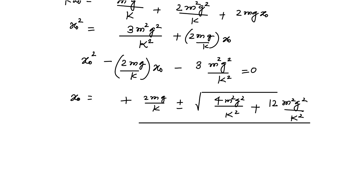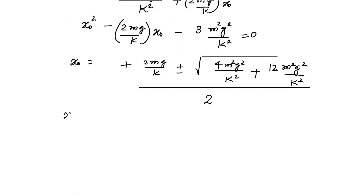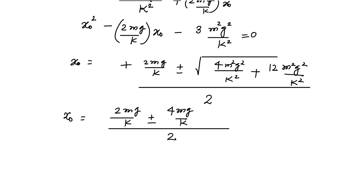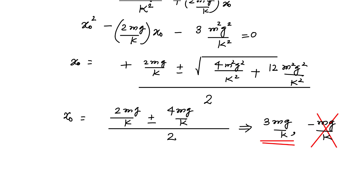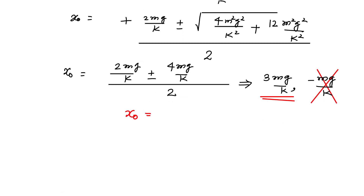Solving the quadratic using the quadratic formula gives two solutions: x₀ = 3mg/k and x₀ = −mg/k. The negative solution has no physical meaning since x₀ is a compression and must be positive. Therefore, the minimum compression required is x₀ = 3mg/k.